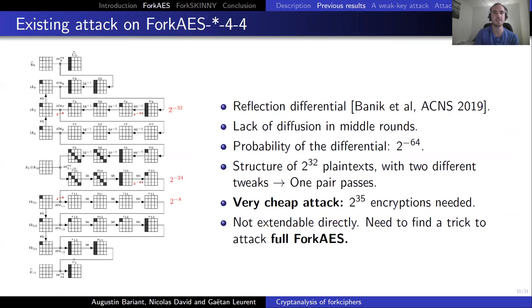So what are the existing attacks on ForkAES? Banik et al in ACNS 2019 proposed a reflection differential. This is a truncated differential which exploits the lack of diffusion in the middle round. The total probability of the differential is 2 to the power minus 64. Structures of 2 to the power 32 plaintexts are enough, and the attack is very cheap as 2 to the power 35 encryptions are needed. However, it's not extendable directly to full ForkAES. If we add one round at the beginning and one round at the end, the complexity grows too much to be a right attack.